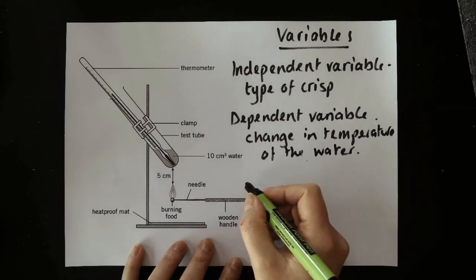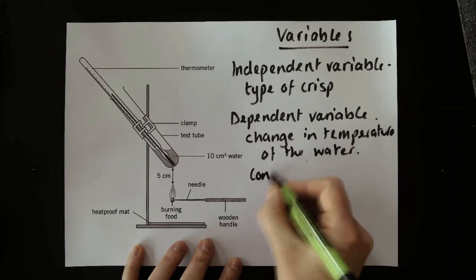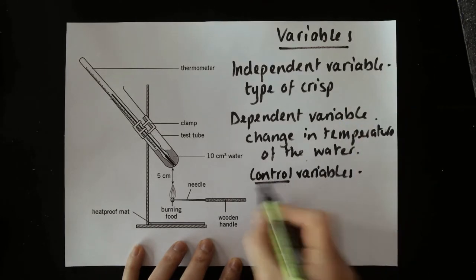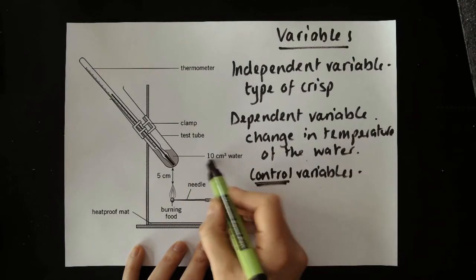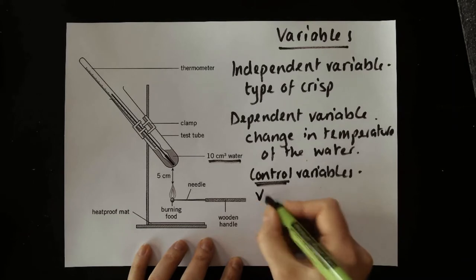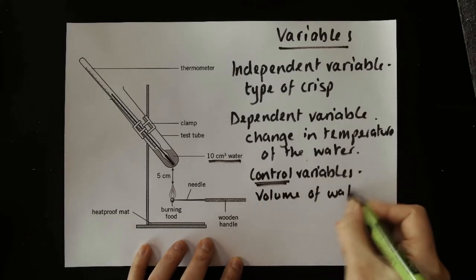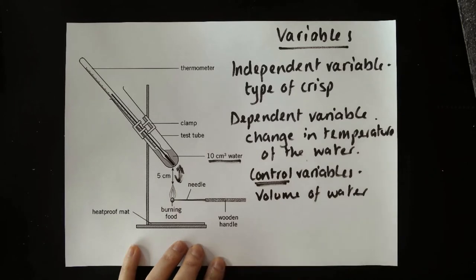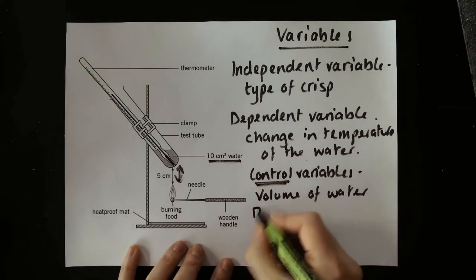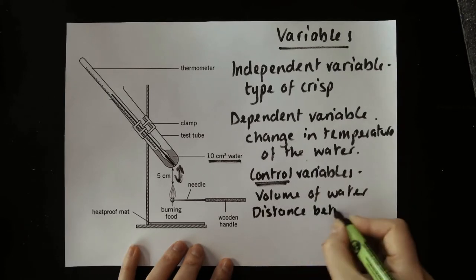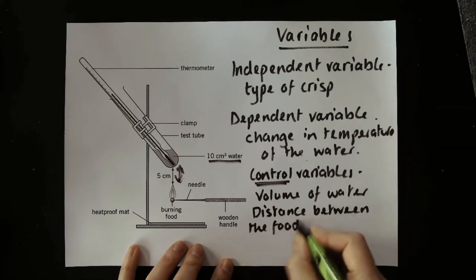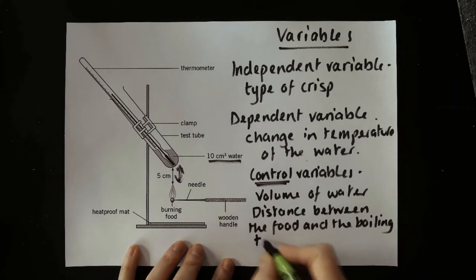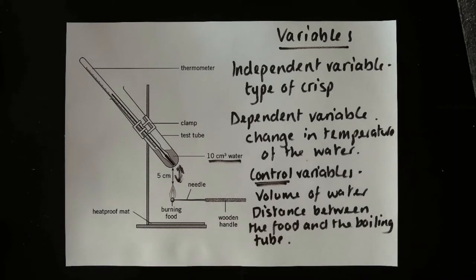And then so that I can get valid results I need to have control variables. You're only allowed to change one thing. So I'm only allowed to change the type of crisp. Everything else I must control and keep the same. So if we look here, 10 centimeter cubed of water. I'm going to keep the volume of water the same. The crisp should always be 5 centimeters away from the test tube. So I'm going to keep the distance between the food and the boiling tube the same. Now I've got a plan of my variables I can show you the experiment.